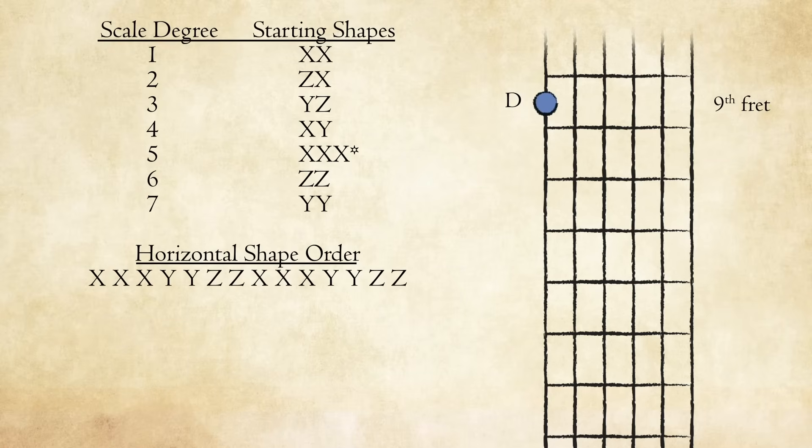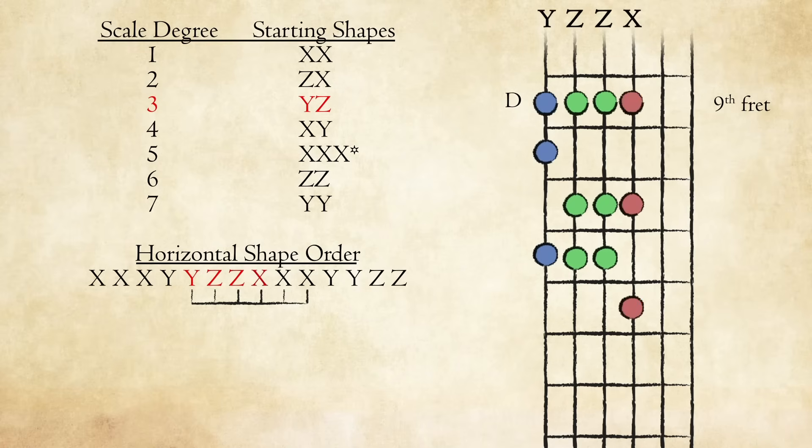Let's try Bb starting on the third scale degree. The third degree of Bb is D. Find D on your fretboard, and once again, look at the chart and remember the horizontal order of the shapes. The pattern for scale degree 3 starts with Y and Z. Play those first two shapes. Z is followed by the second Z, and then an X. Notice we haven't shifted up. All our finger shapes are still on the ninth fret. Up to this point, we haven't come across a situation that requires a shift up. Our next finger shape, however, is moving from the third string to the second string. So we play our next X shape up one fret and follow that with another X.